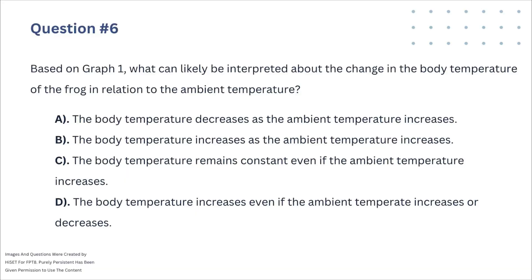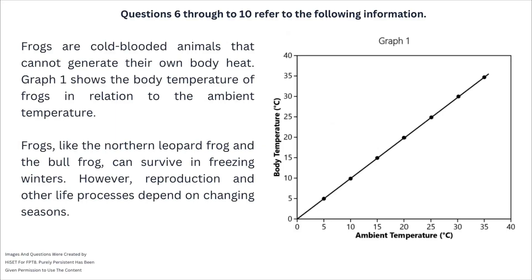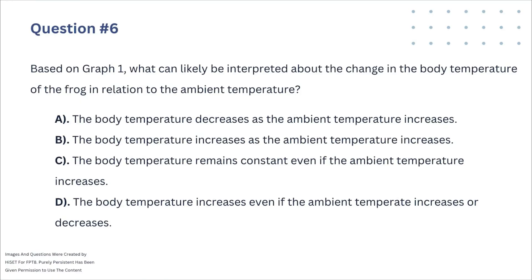Question 6: Based on Graph 1, what can likely be interpreted about the change in body temperature of the frog in relation to the ambient temperature? Looking at the chart — it's a linear chart, so as the ambient temperature around the frog goes up, they both go up together at the same rate. Answer A says body temperature decreases as ambient temperature increases — that did not happen, so A is not the answer.